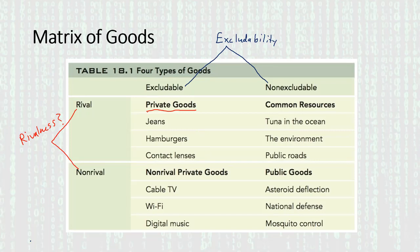Private goods are the kind we've generally been talking about in the market process. If we made a list of all the goods we use and purchase on a daily basis, the vast majority would probably fall into the private goods category. But there are some very important goods — things that are scarce and valuable, needed for a successful economy and a good life — that are not private goods.